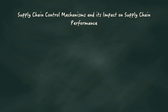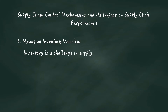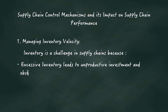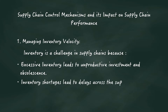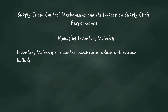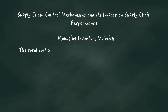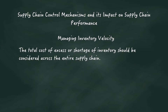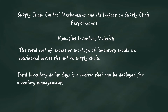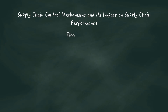I will now present some highlighting points across supply chain control mechanisms and their impact on supply chain performance. Managing inventory velocity: inventory is a challenge in supply chain because excessive inventory leads to unproductive investment, while inventory shortages lead to delays and customer dissatisfaction. Inventory velocity is a control mechanism that reduces the bullwhip effect and ensures timely supply. Inventory compression is emphasized at every point of the supply chain, and the total cost of excess or shortage of inventory should be considered across the entire supply chain. Total inventory dollar days is a metric that can be deployed for inventory management.